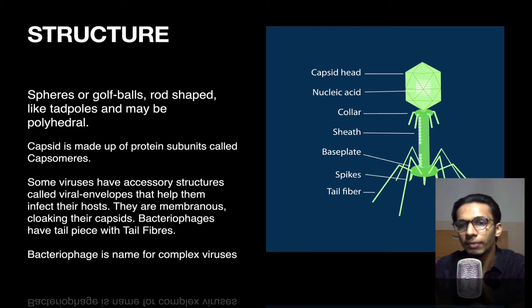Viruses have many tail fibers - many small legs just like insects. After that we have spikes below the base plate, which are pointed sticks. These sticks help in injecting various substances inside the host cell. They can be spheres or golf balls, or rod-shaped like tadpoles, and may be polyhedral.